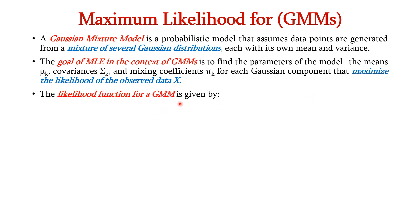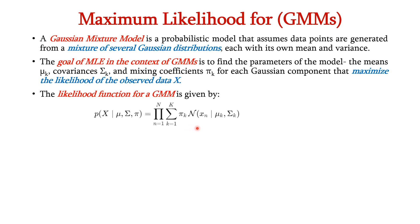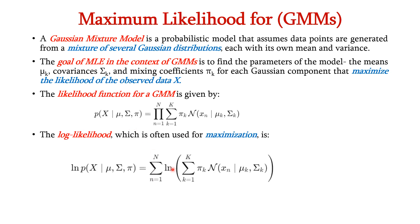We can define the likelihood function for a GMM as p(x | μ, σ, π) = product from n=1 to N of summation from k=1 to K of πk into the normal distribution of xn given μk, σk. For maximization, let us apply the log likelihood for this function. After this, we get the equation where the product becomes a summation after applying the log.